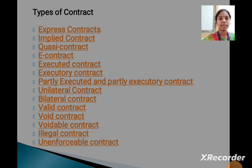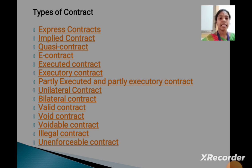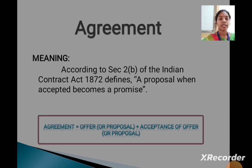The types of contract are: express contract, implied contract, quasi-contract, e-contract, executed contract, executory contract, partly executed and partly executory contract, unilateral contract, bilateral contract, valid contract, void contract, voidable contract, illegal contract, and unenforceable contract.